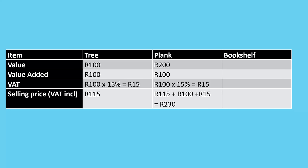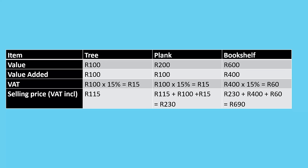The bookshelf person adds labor, materials, and markup to make it a 600 Rand bookshelf — the value added is 400 Rand, so there's 60 Rand worth of VAT added. We take the original 230 Rand for the planks, add the 400 Rand improvement and the 60 Rand VAT, so the furniture maker sells the bookshelf for 690 Rand including VAT — or 600 Rand excluding VAT.